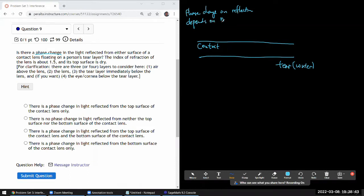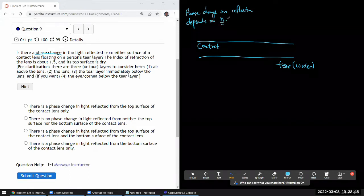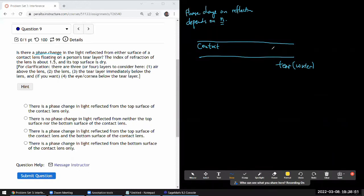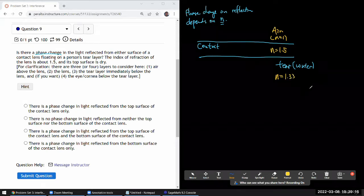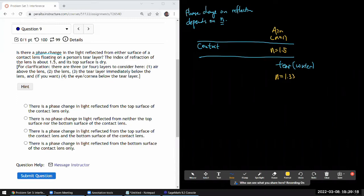It depends on relative values of index of refraction. So it says the index of refraction of the lens is 1.5. And top surface is dry. So the top here would be air at n equals one. And the bottom surface, which is water. And they're not giving you the index of refraction of water, but I've done this enough to have memorized that that's 1.33.